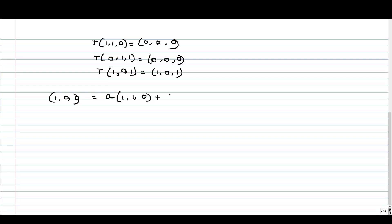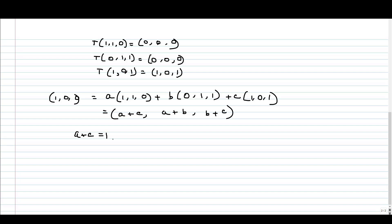Now let me express (1,0,0) as a linear combination of these three beta vectors. Writing a·(1,1,0) + b·(0,1,1) + c·(1,0,1) = (1,0,0) gives us the system: a + c = 1, a + b = 0, b + c = 0. Solving these three equations, we get a = 1/2, b = -1/2, and c = 1/2. This is a unique solution.